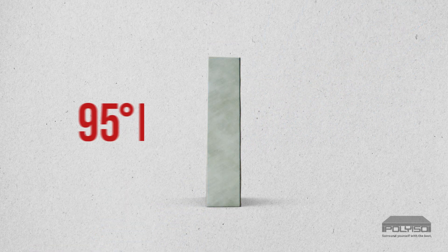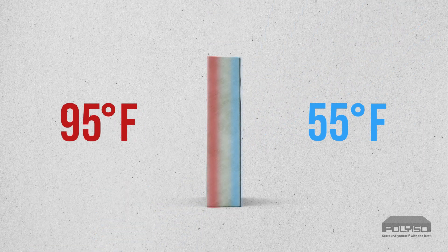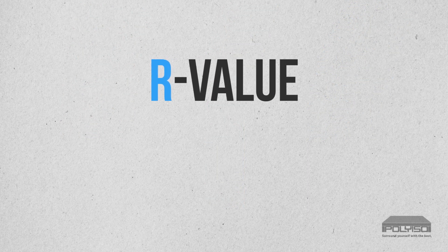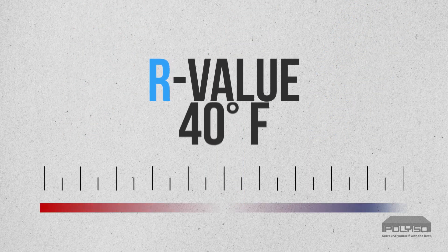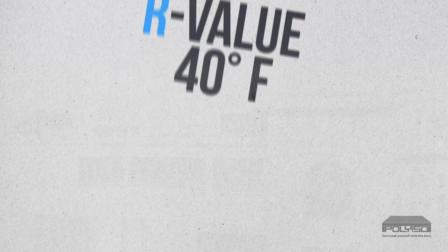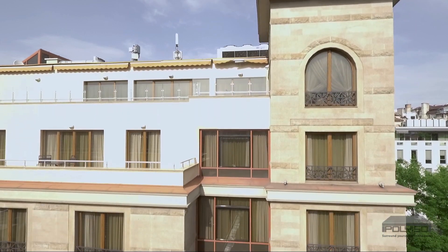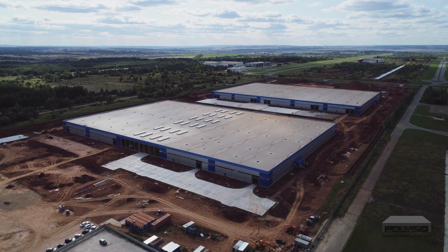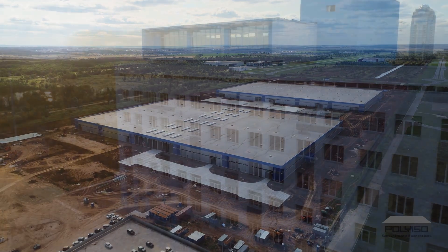This mean temperature establishes a consistent baseline for measuring R-value when testing or comparing products. For example, working in degrees Fahrenheit, if the hot surface is 95 and the cold surface is 55, the mean temperature is 75. If we target 40 as the mean temperature, the hot and cold surfaces could be set at 60 and 20. R-value is typically measured with at least a 40 degree Fahrenheit difference between the hot and cold surfaces to ensure sufficient heat flow through the sample.